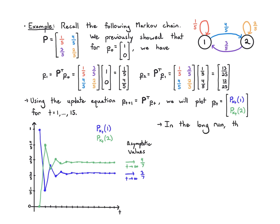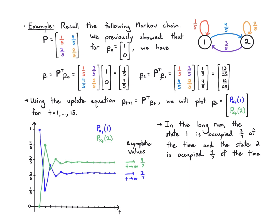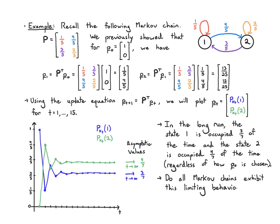In the long run, I'm spending 3/7 of my time in state 1 and 4/7 in state 2. It doesn't matter how the initial state is chosen — here I chose p0 = (1, 0), but for any choice of p0 we converge to the same asymptotic values. Do all Markov chains exhibit this behavior, or is it something special? And if they do have this limiting behavior, how do we figure out the limit?